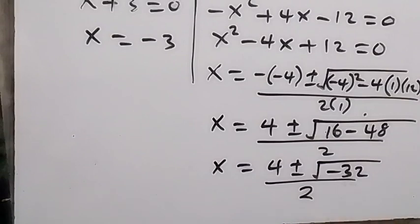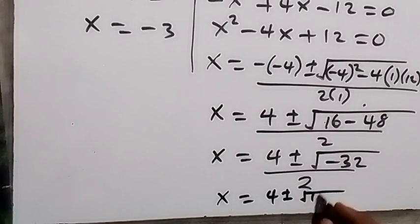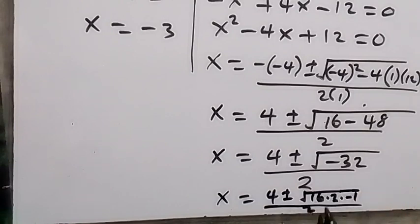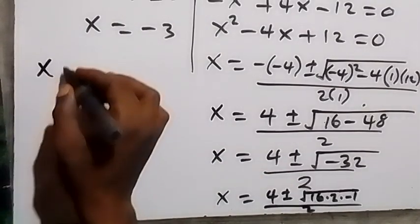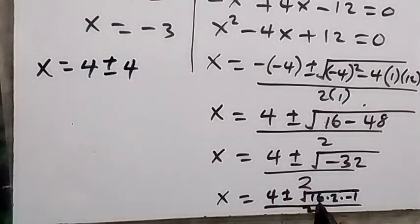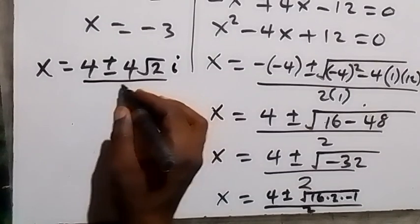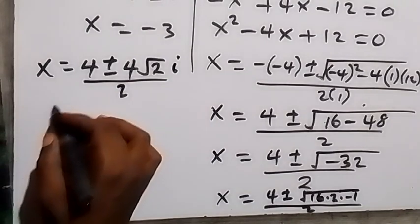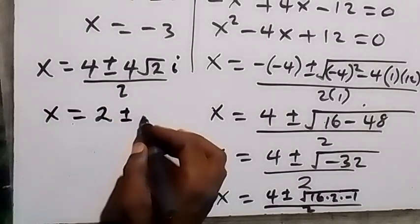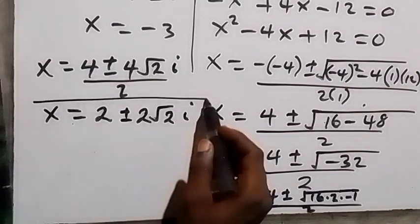We can separate the square root of minus 32, giving x equals 4 plus or minus square root of 16 times 2 times minus 1, all over 2. Square root of 16 we bring out as 4, and square root of minus 1 is i. So x equals 4 plus or minus 4 root 2 i, all over 2, which gives x equals 2 plus or minus 2 root 2 i.